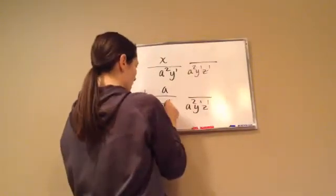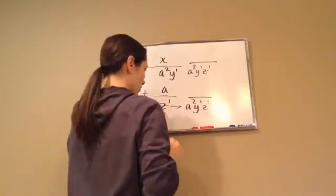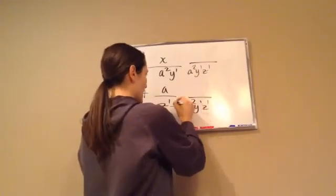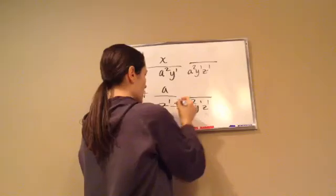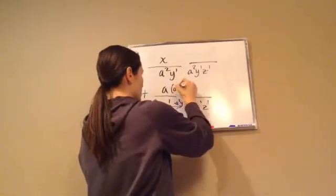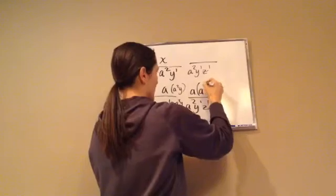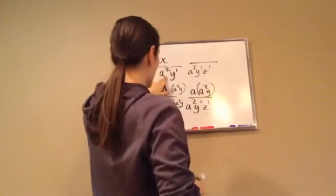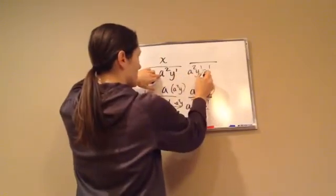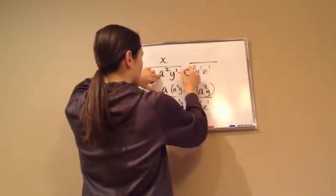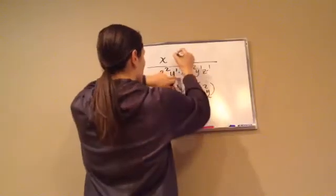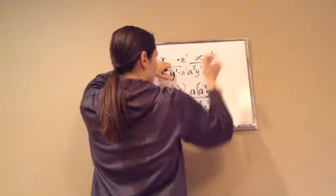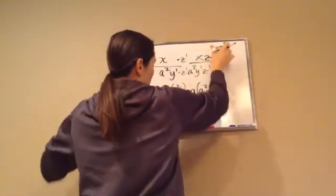So now you ask yourself, how did I get from here to here? Well, what's different from this spot to this spot? We multiply by z. So that's what I'm going to do here. z. So this becomes xz. And then what did I get from here to here? We times it by a squared y to be able to get that. So we're going to times this by a squared y. So this becomes a times a squared y.